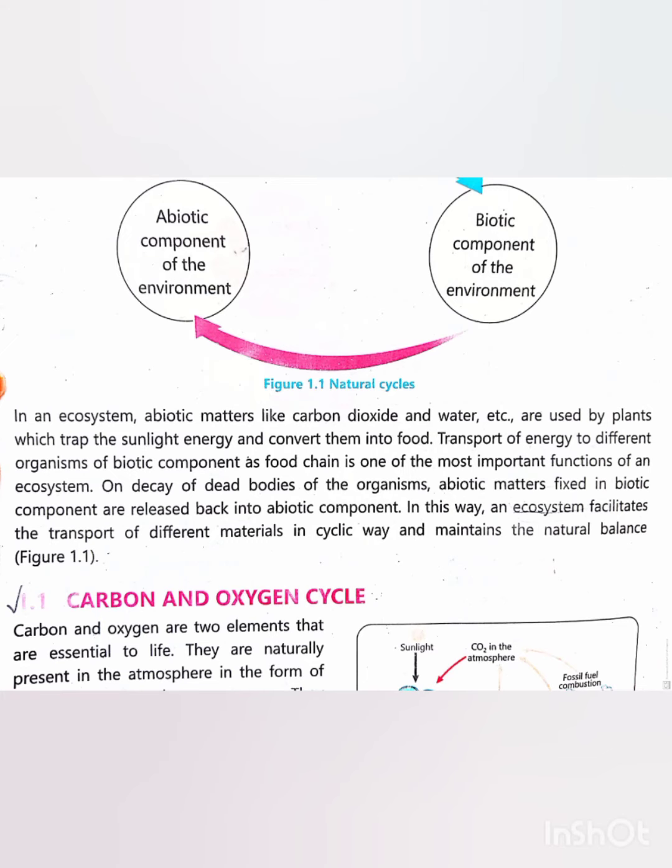Now let's talk about how abiotic component and biotic components help to maintain the natural balance in an ecosystem. Carbon dioxide, water and sunlight is used by the plants to make their own food. This food provides energy to plants.